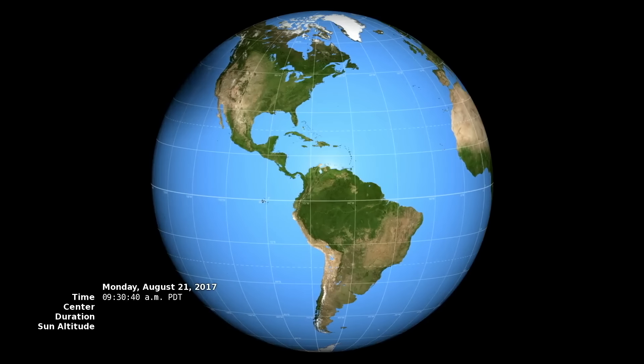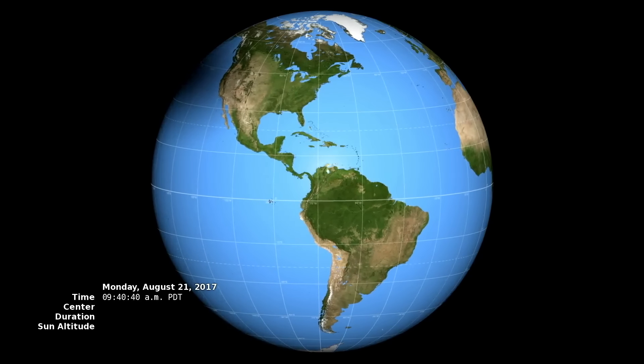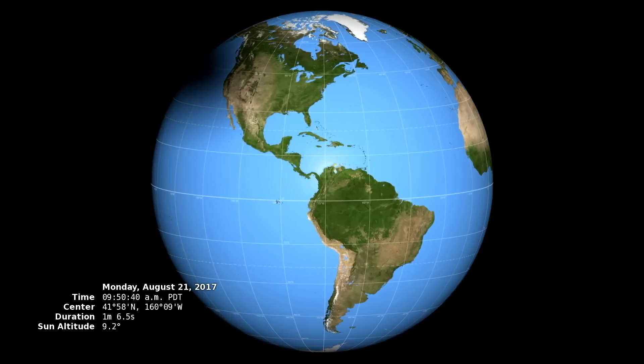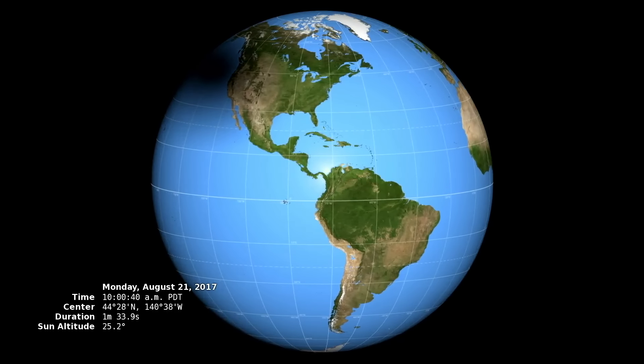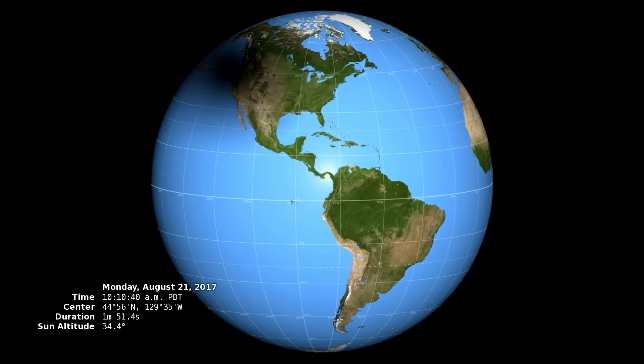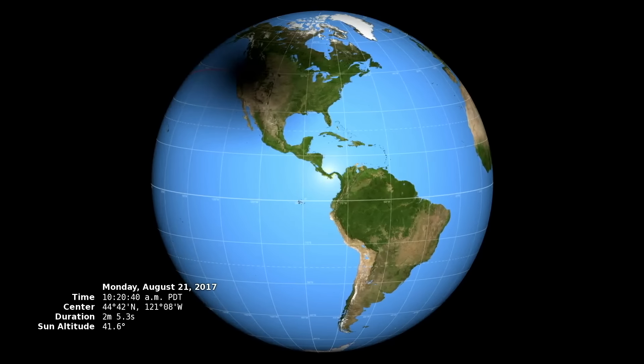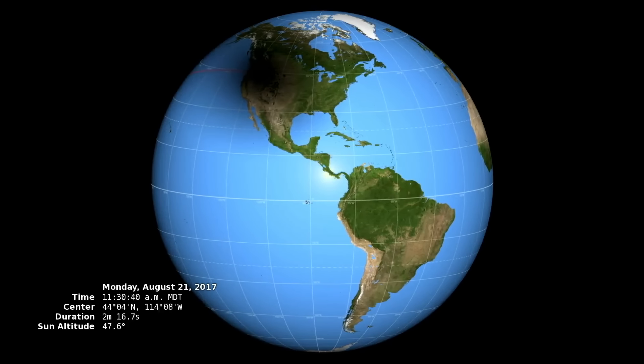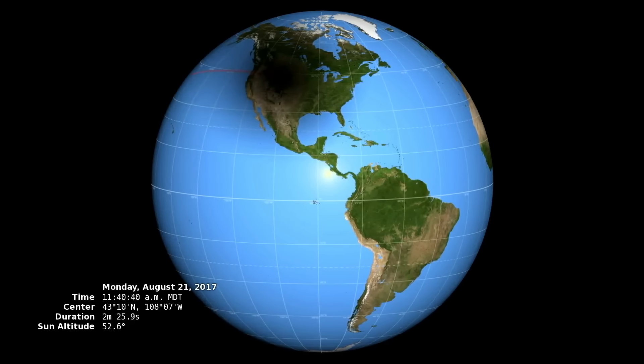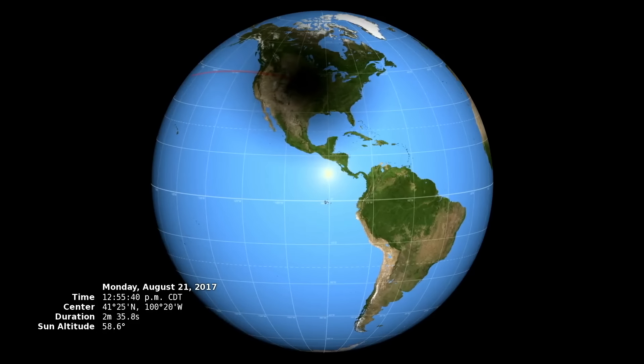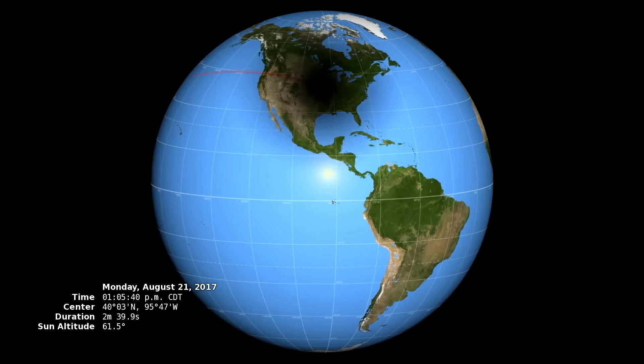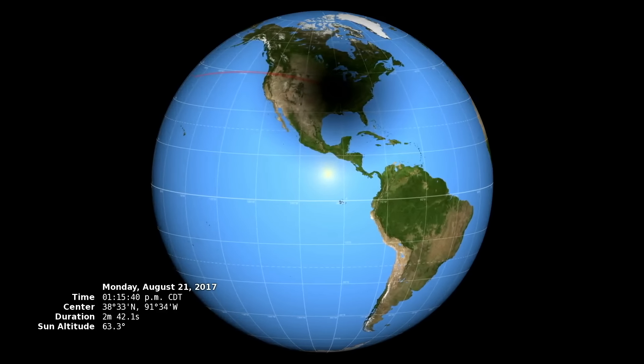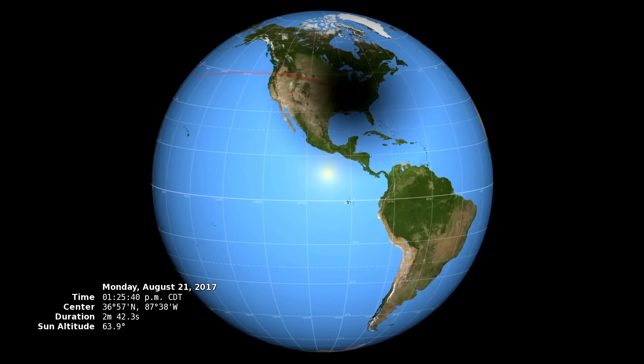As the moon orbits the earth, it casts a shadow that moves across the face of the earth. Here, you see the shadow from the 2017 Great American Eclipse. Notice that the umbra is tracing a red path behind it. You must be inside that red line, inside the path of the umbra, to see a total eclipse.